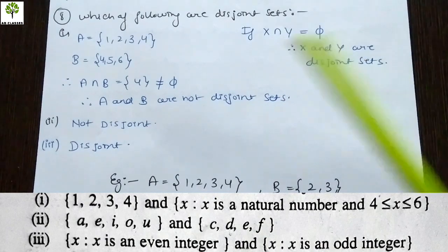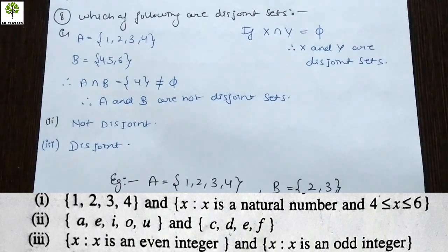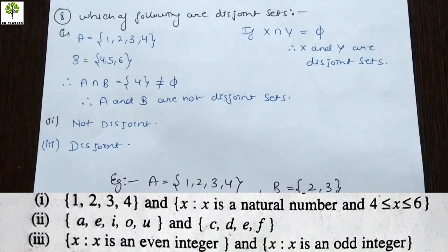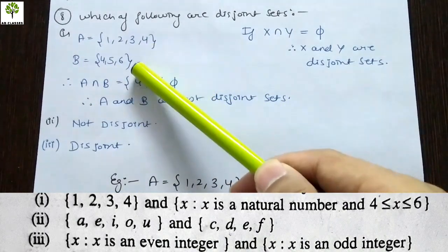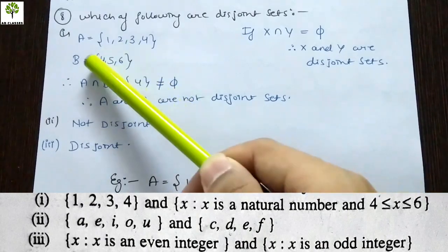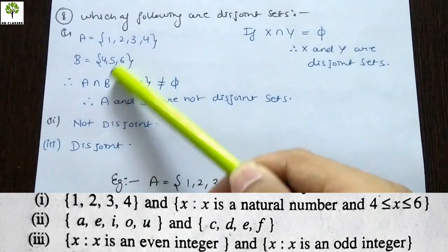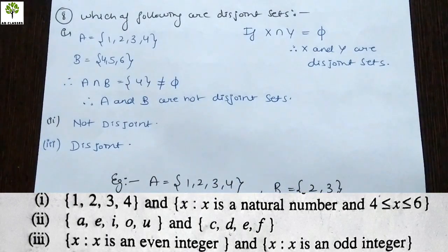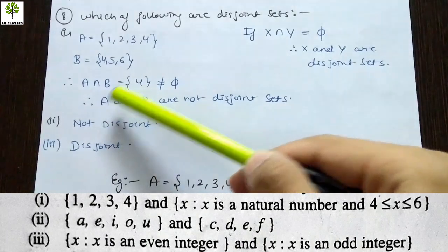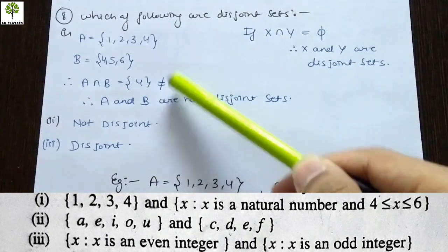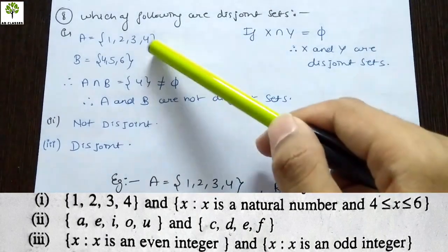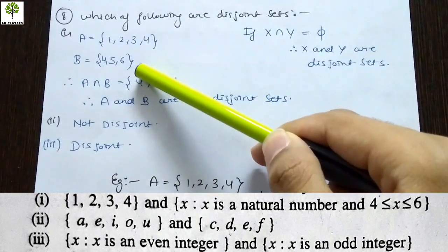Looking at the first part, one set has elements 1, 2, 3, 4 and set B is defined as x is a natural number with 4 less than or equal to x less than or equal to 6, so x can be 4, 5, or 6. Set B will be {4, 5, 6}. Now clearly, 4 is in set A and 4 is also in set B, so there is a connection between the two. Their intersection gives 4, so they are NOT disjoint sets.